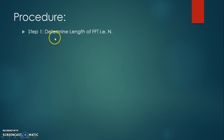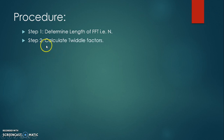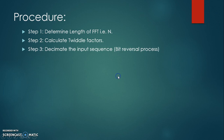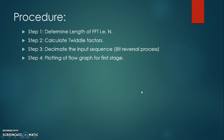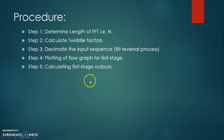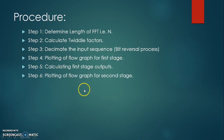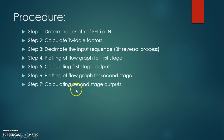In step one we have to determine the length of FFT, that is capital N. In step two we have to determine the twiddle factors. In step three we have to decimate the input sequence by using the bit reversal process. In step four we have to plot the flow graph for the first stage. Step five, we calculate the first stage outputs. Step six, we plot the flow graph of the second stage, and in step seven we calculate the second stage outputs, and finally we summarize all the FFTs.